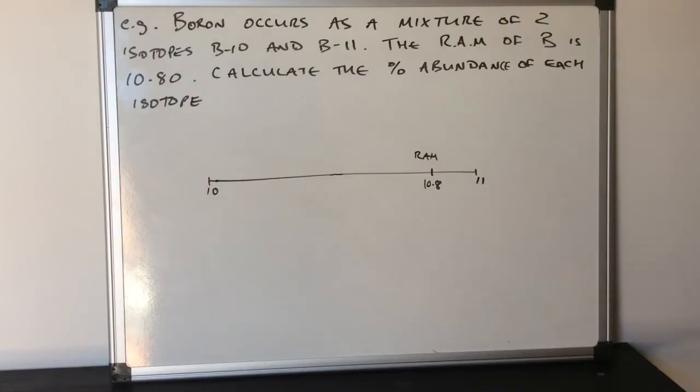The fact that the weighted mean mass, the relative atomic mass is 10.8, that's telling us that isotope 11 is pulling the average more than isotope 10. So what that means is isotope 11 must be more abundant than isotope 10.